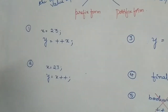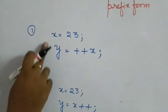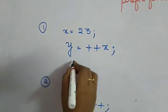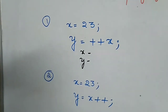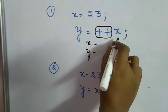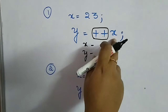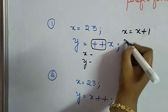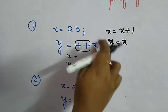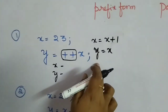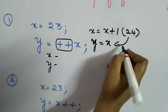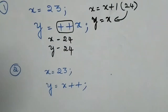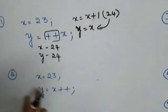Let us understand these operations with examples. In the first example, x is equal to 23 and y is equal to ++x. Since the increment operator is placed before the operand (pre-increment), before assigning to y the value will increment — so x becomes x plus 1 which is 24, and then 24 is assigned to y. So the value of both x and y will be 24.